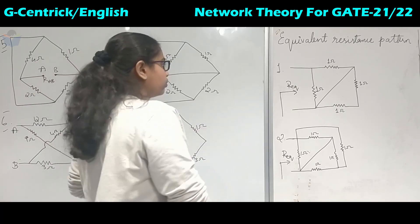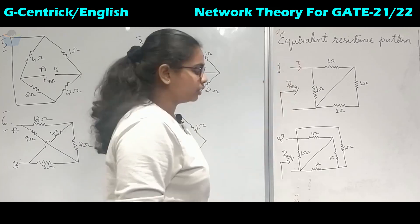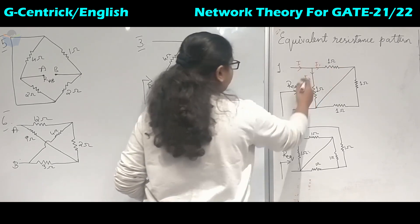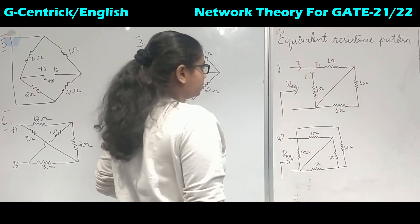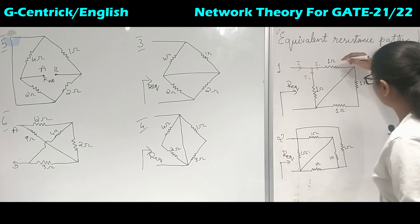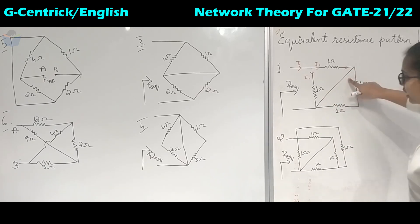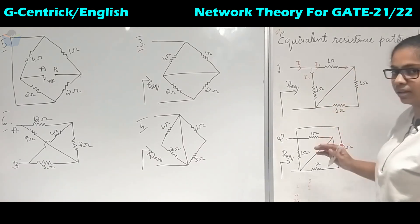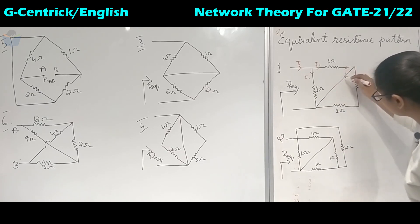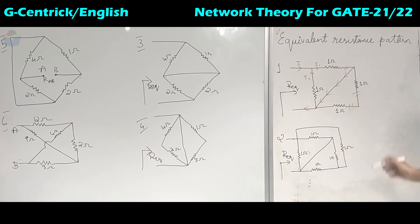Taking the first problem, we need to find the R equivalent at these two terminals. If we assume current is flowing in that direction, it will get divided — some current I1 and some current I2 — so they are not in series. Now, current goes in the least resistive path; it does not flow through the more resistive path. So all the current will go in the short circuit direction and exit. These two branches have no significance.